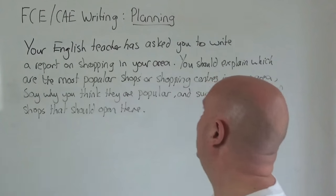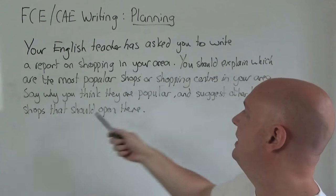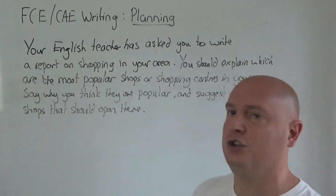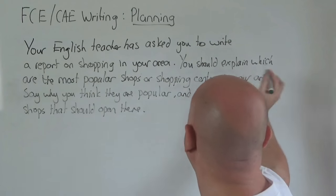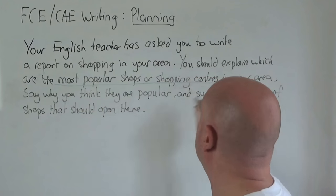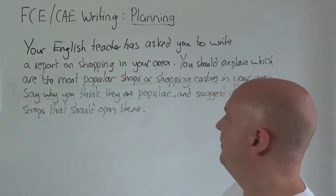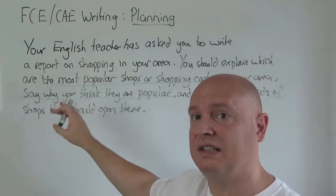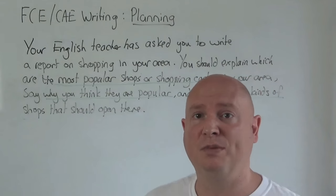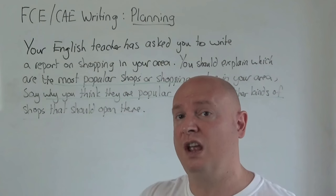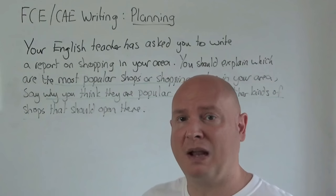Let's have a look. 'Your English teacher has asked you to write a report on shopping in your area. You should explain which are the most popular shops or shopping centres in your area, say why you think they are popular, and suggest other kinds of shops that should open there.' Before I even brainstorm, I'm going to do one important thing: I have underlined three points that I need to answer in my essay. I need to say what are the most popular shopping centres, why I think they're popular, and suggest other shops. Remember — if you miss one of those points, the task is incomplete. You need to make sure by underlining that you answer all those points.